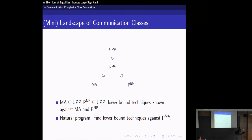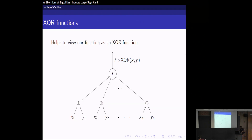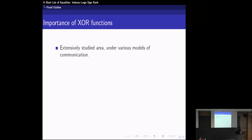Now I'll quickly discuss the proof outline. For our analysis, it helps to view our function as an XOR function. An XOR function f∘XOR is defined on 2n bits by pairing up input variables and feeding them into f. XOR functions are extensively studied in communication complexity — Hatami, Hosseini, and Lovett showed the deterministic communication complexity of f∘XOR is polynomially related to the parity decision tree complexity of f.